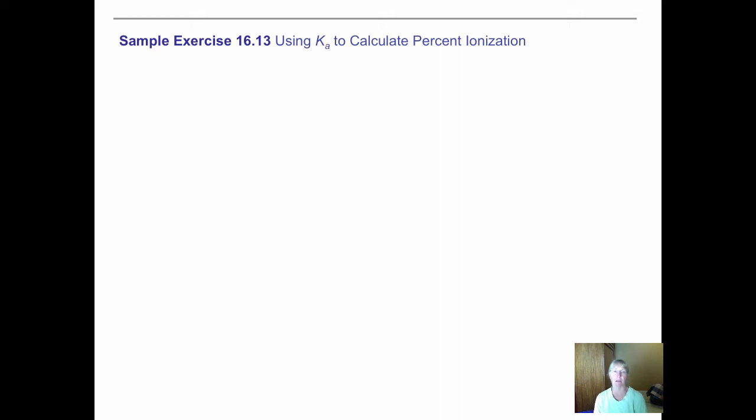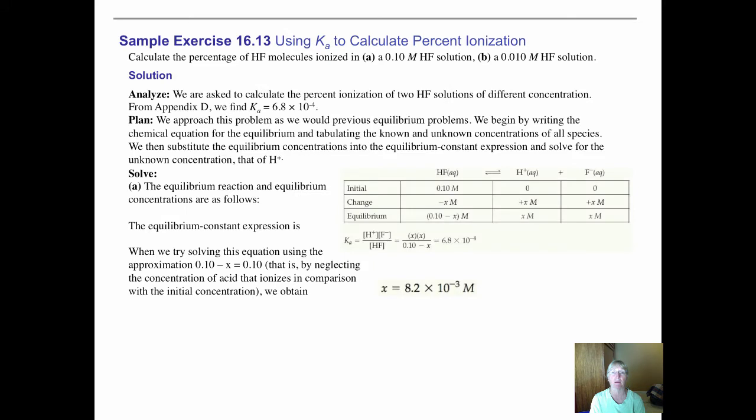We'll finish up this section on Ka by doing a problem with percent ionization that also introduces the concept of how sometimes it's not appropriate to ignore the X, the change in original concentration of an acid. This problem asks to calculate the percentage of hydrofluoric acid molecules that are ionized in a 0.1 and a 0.01 molar solution. We'll also look at the impact of concentration on percent ionization.